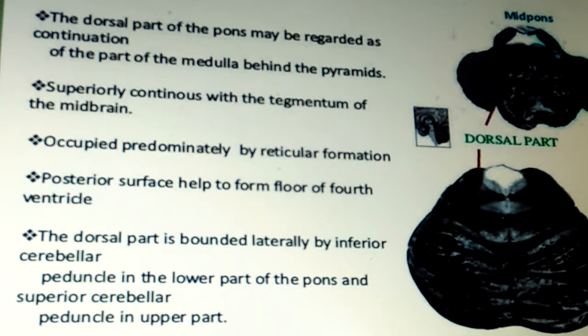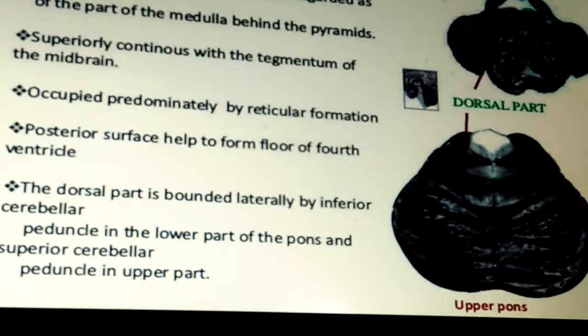The dorsal part of the pons may be regarded as a continuation of the medulla behind the pyramids, superiorly continuous with the tegmentum of the midbrain, and is occupied predominantly by the reticular formation. The posterior surface helps form the floor of the fourth ventricle. The dorsal part is bounded laterally by the inferior cerebellar peduncle in the lower pons and the superior cerebellar peduncle in the upper pons.